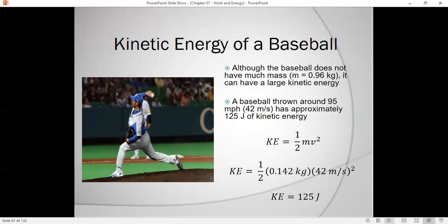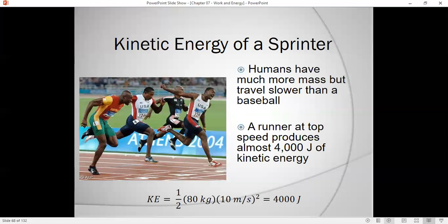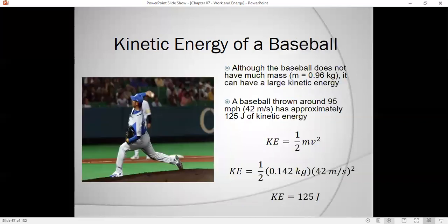Eighty kilogram person running 10 meters per second. Let's take a look at this one right here. Ten squared is 100, so that's 100 meters squared per second squared times 80, that becomes 8,000. We take one-half of that, that gives us 4,000. So a typical person running will have a few thousand joules of kinetic energy. An elite sprinter will have maybe up to about 4,000 joules.